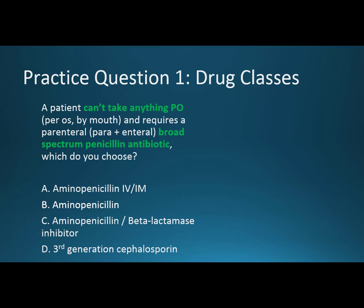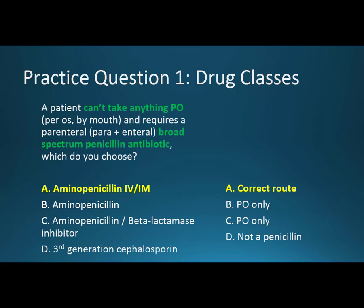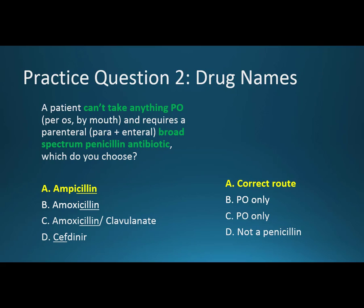Which do you choose? A: aminopenicillin IV/IM; B: aminopenicillin PO; C: aminopenicillin with beta-lactamase inhibitor; D: third-generation cephalosporin. If it's parenteral, it's going to be IV/IM. Amoxicillin only comes PO, Augmentin only comes PO, and the third-generation cephalosporin — because it has the 'cef' stem — won't be a penicillin. So ampicillin IV/IM is correct, and we can underline the '-cillin' stem for the aminopenicillin.